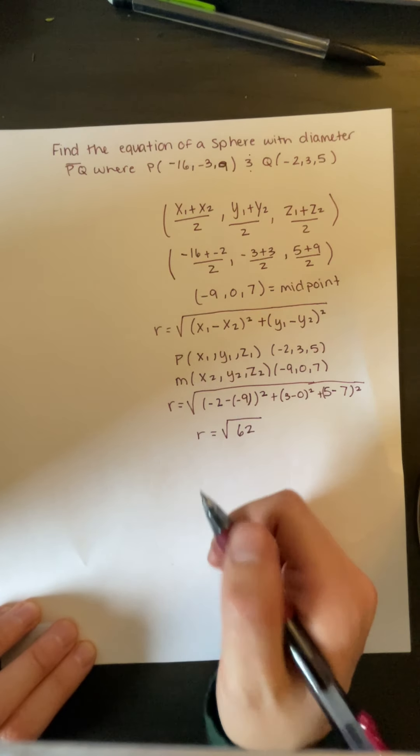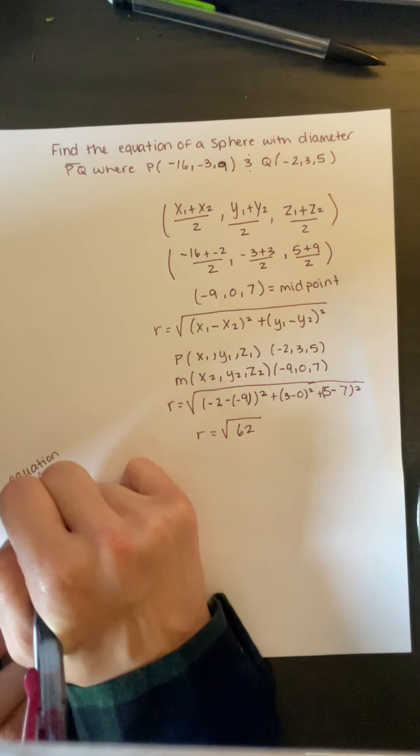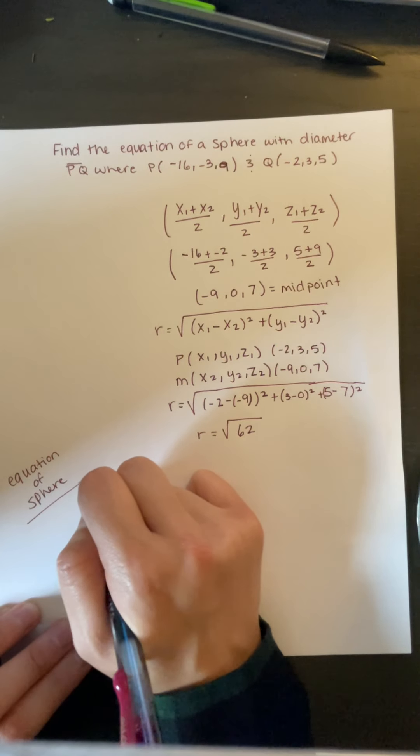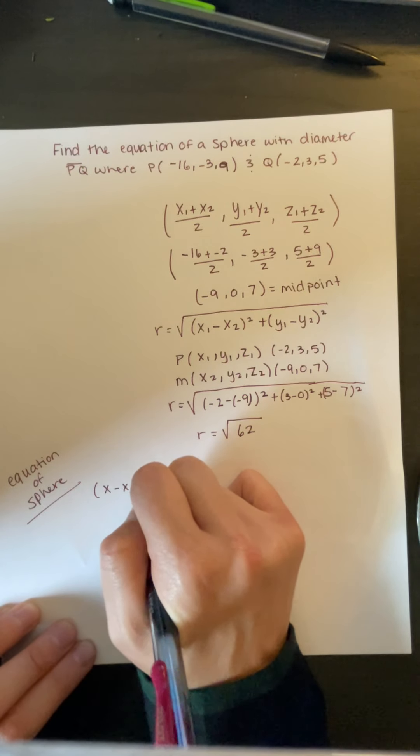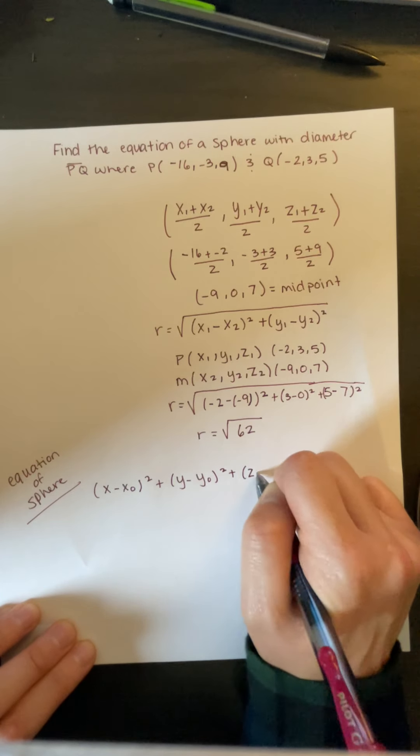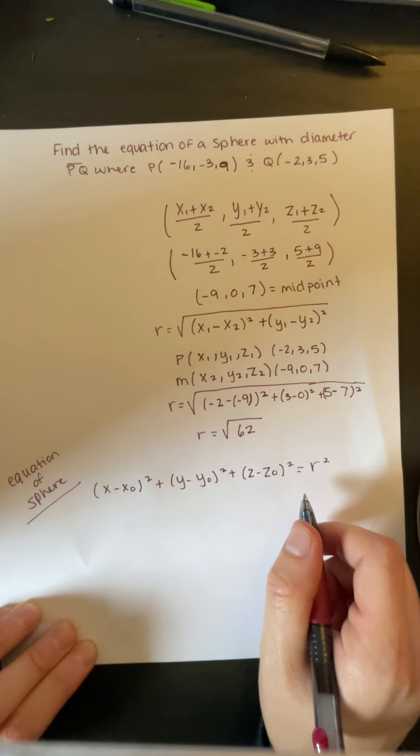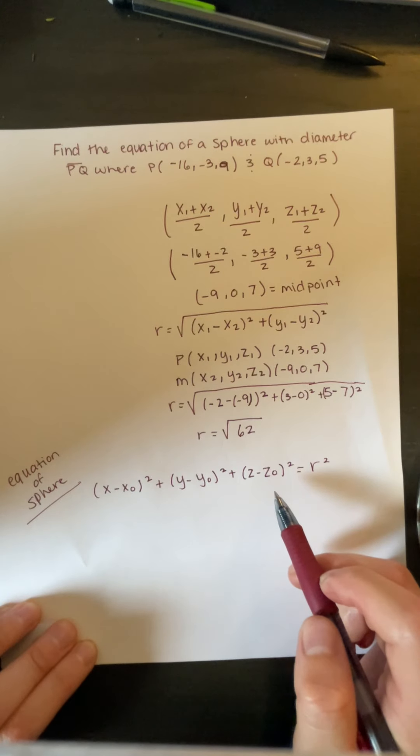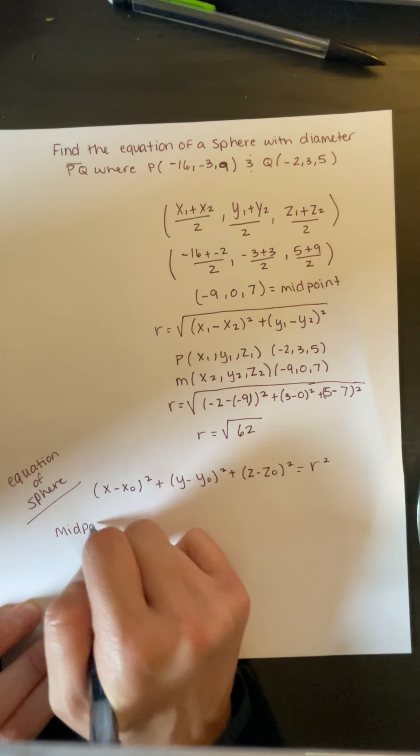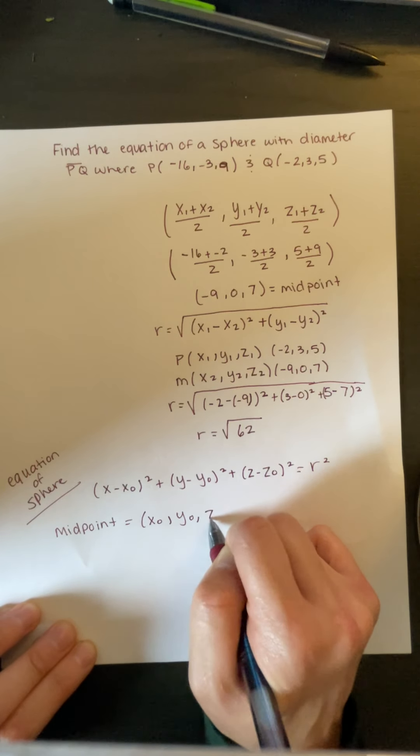If you don't remember the equation of a sphere, it is x minus x0 squared, plus y minus y0 squared, plus z minus z0 squared, equals r squared, where r is your radius, and x0, y0, z0 is your midpoint. So our midpoint equals x0, y0, and z0.